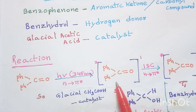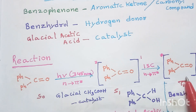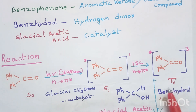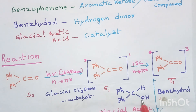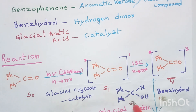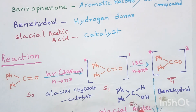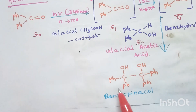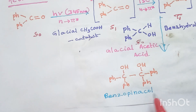From the singlet excited state S1, benzophenone enters triplet excited state T1 through intersystem crossing. In the triplet excited state, benzophenone reacts with benzhydrol — that is Ph-Ph-CHOH — which is the hydrogen donor present in ground state S0, in presence of glacial acetic acid catalyst.